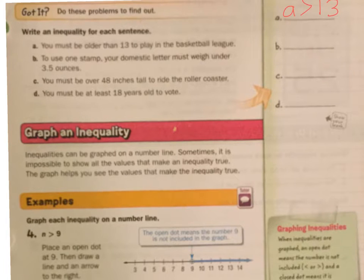To use one stamp, your domestic letter must weigh under 3.5. So my letter must be less than 3.5 ounces. You must be over 48 inches tall to ride the roller coaster. Height must be greater than 48 inches. You must be at least, here's that at least, at least 18 years old to vote. So A for age must be greater than or equal to 18 years old.